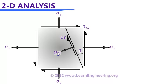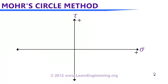Let's see how to use Mohr circle analysis to solve this problem. First step: draw two axes — one for normal stress (horizontal) and another for shear stress (vertical). The positive directions of the axes are as shown.